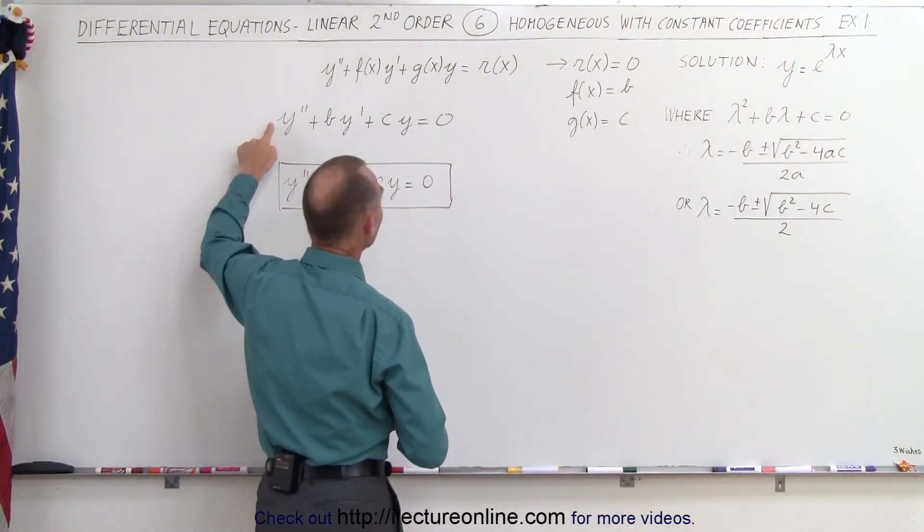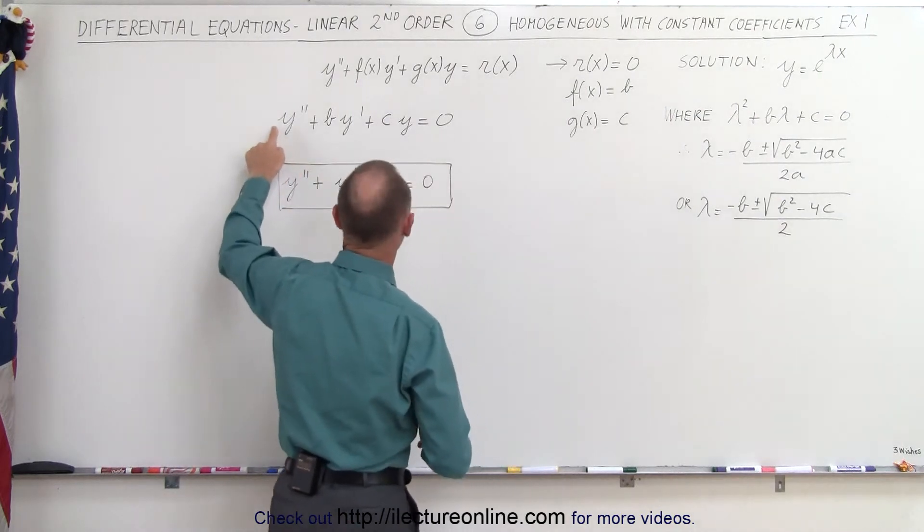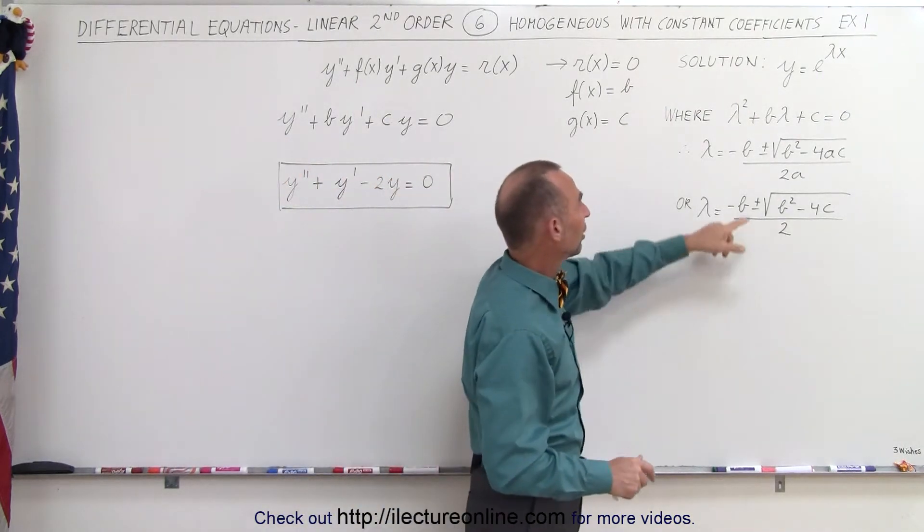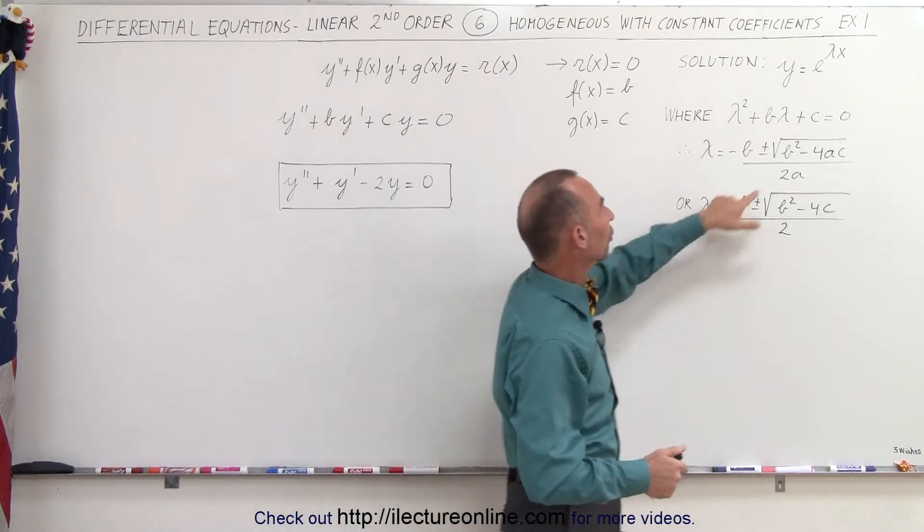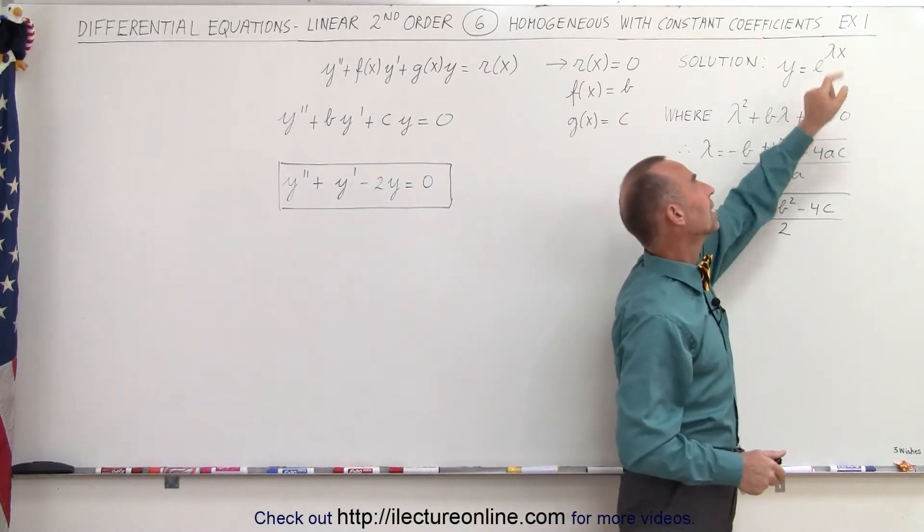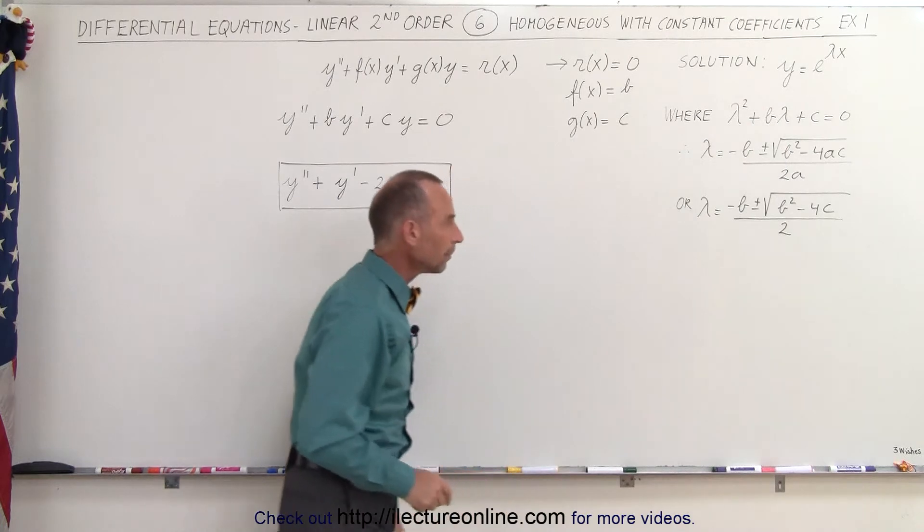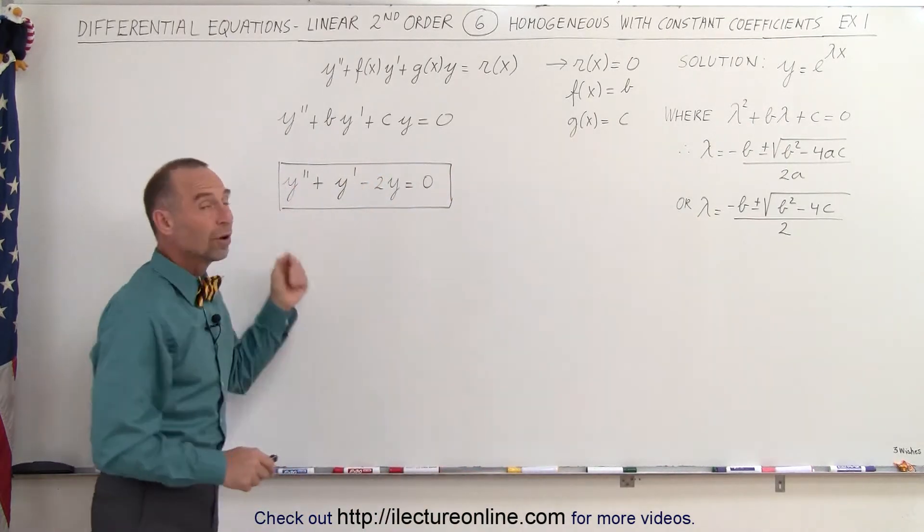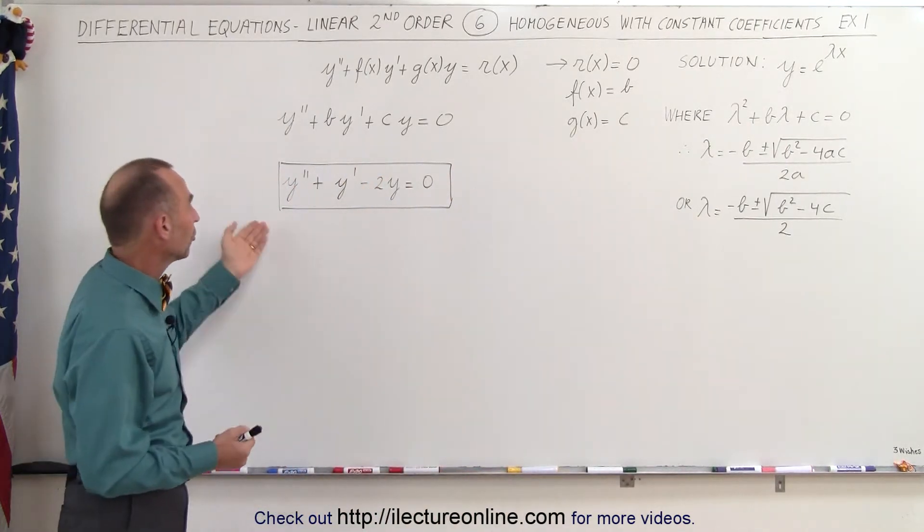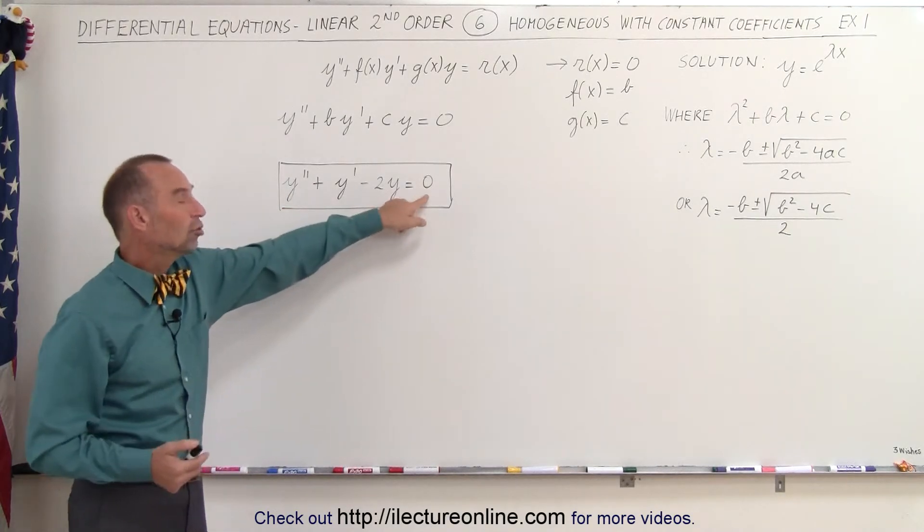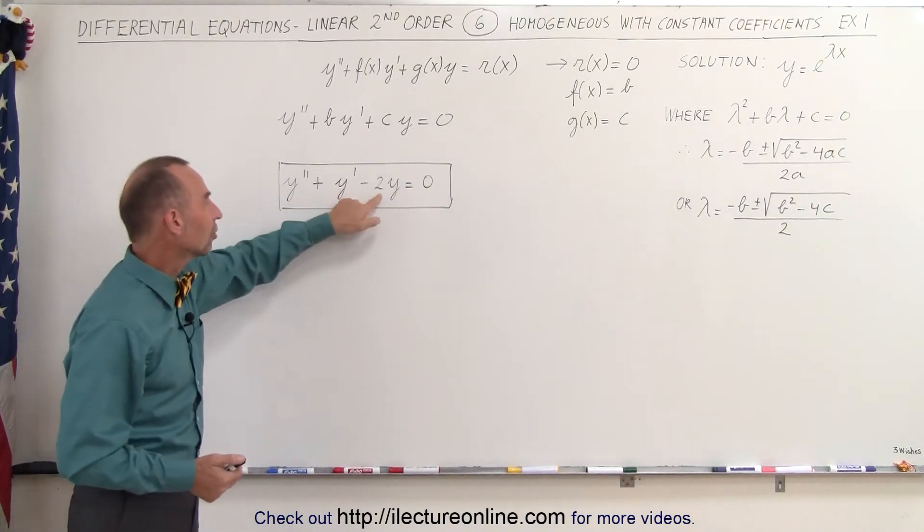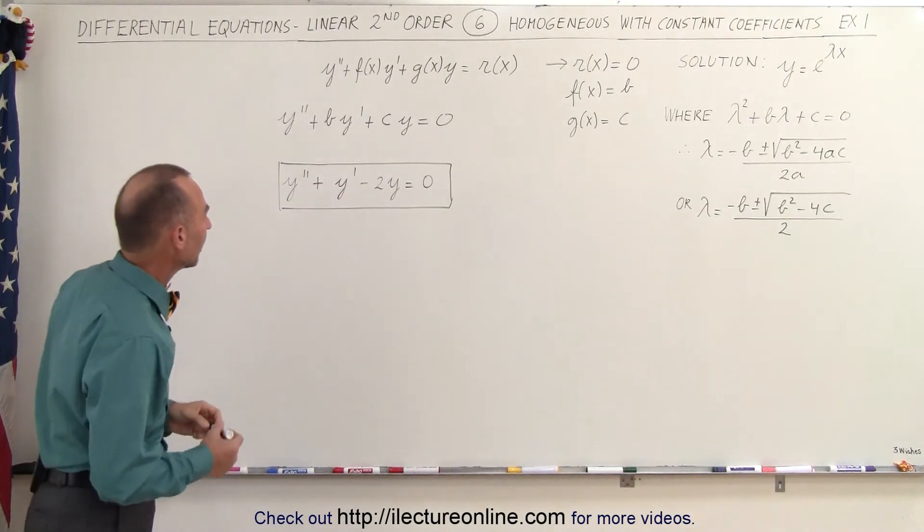The constant in front of y double prime is equal to 1, and so this turns into this, and that's how we will solve for the coefficients that go on top of the exponent. Alright, so here's the equation we're going to deal with as an example. This is our differential equation. It's second order, it is linear, it is homogeneous, and it has constants for the coefficients.